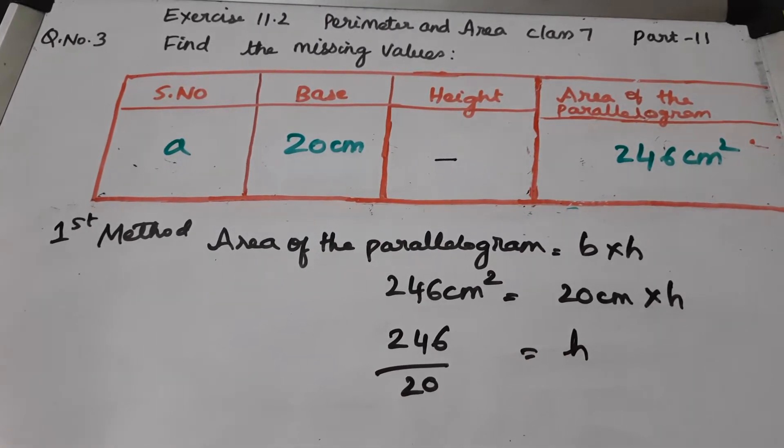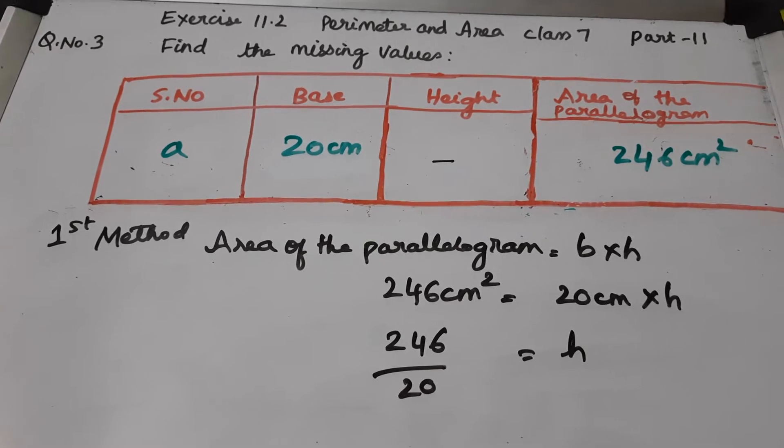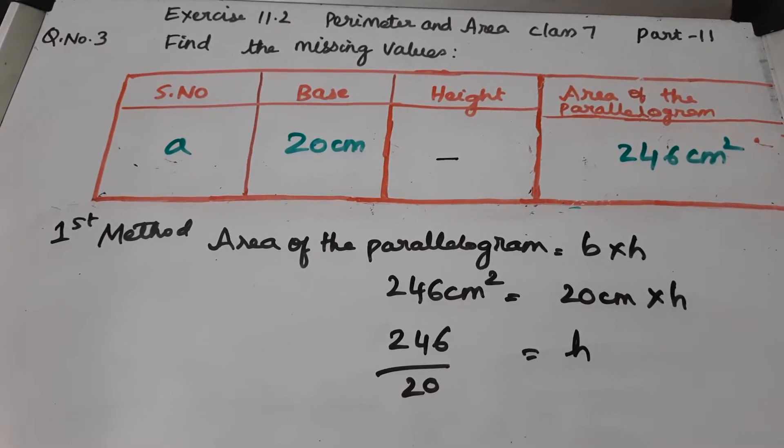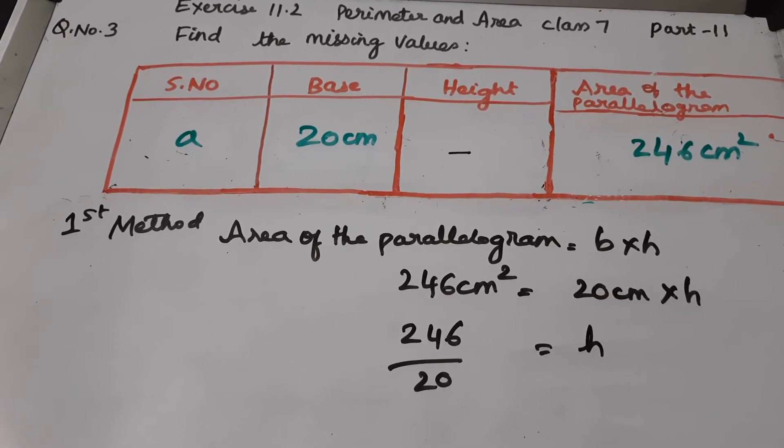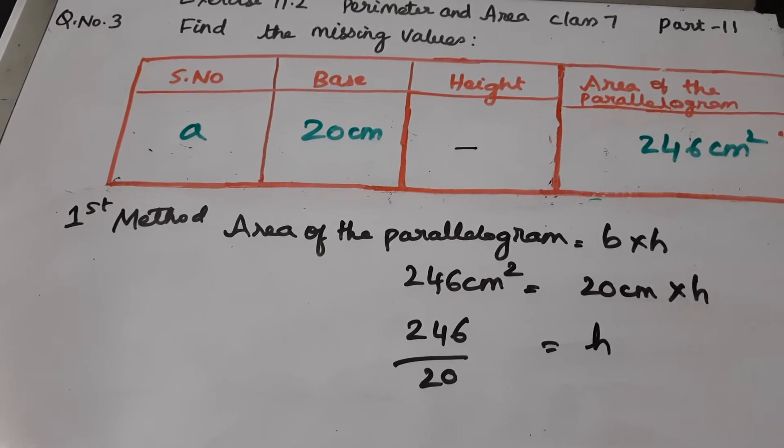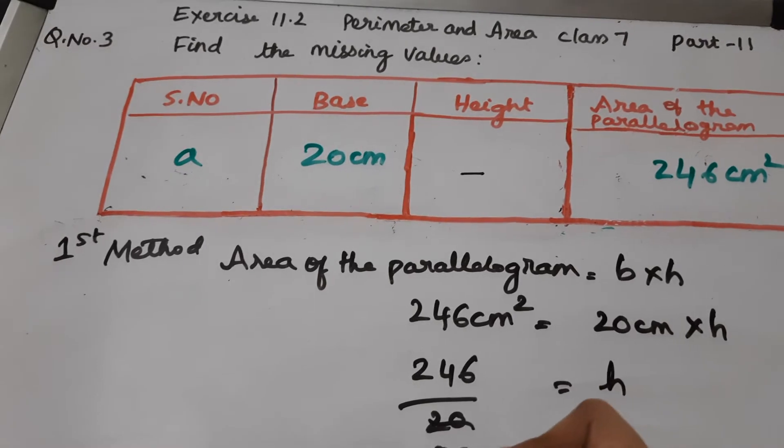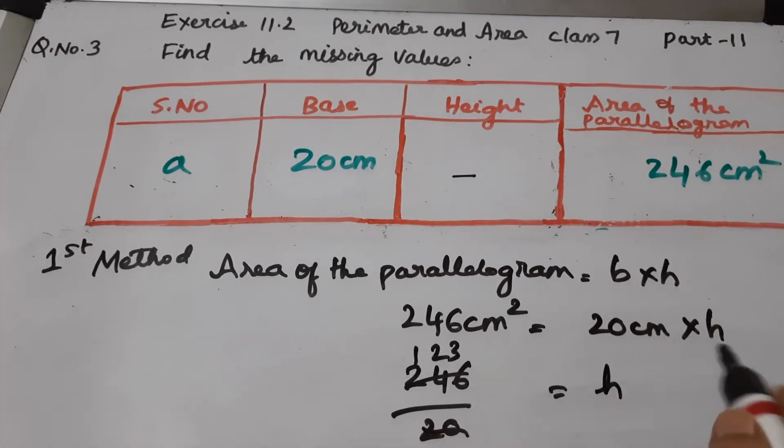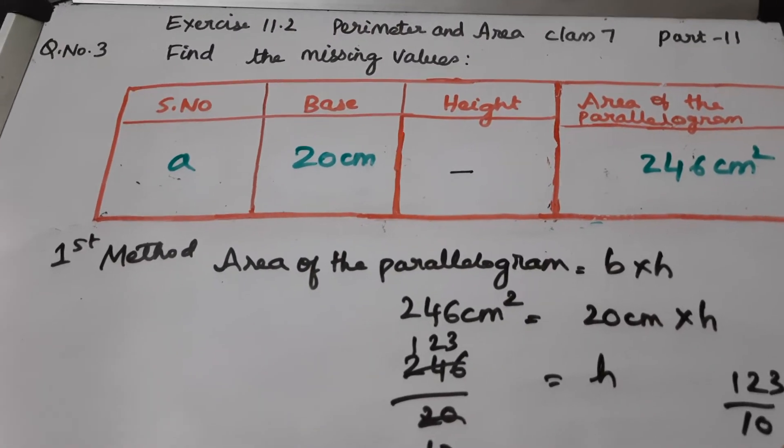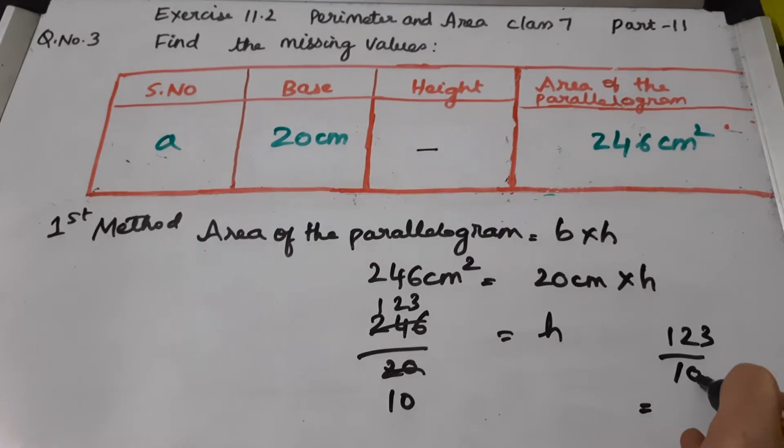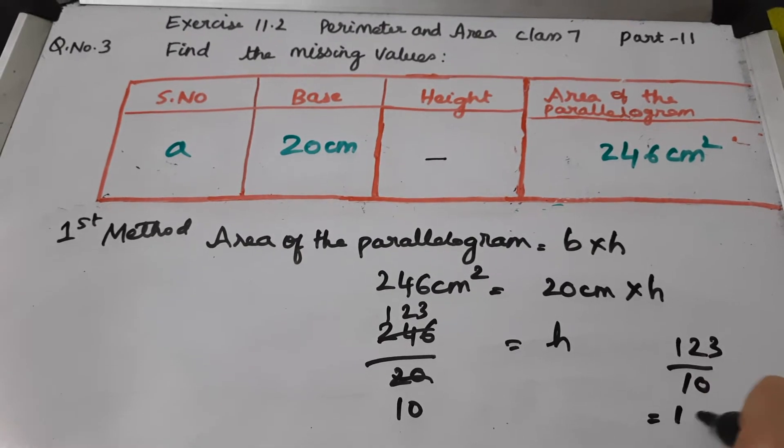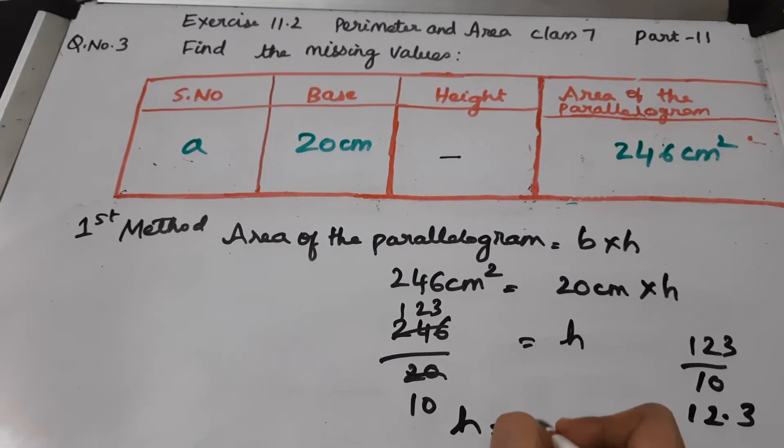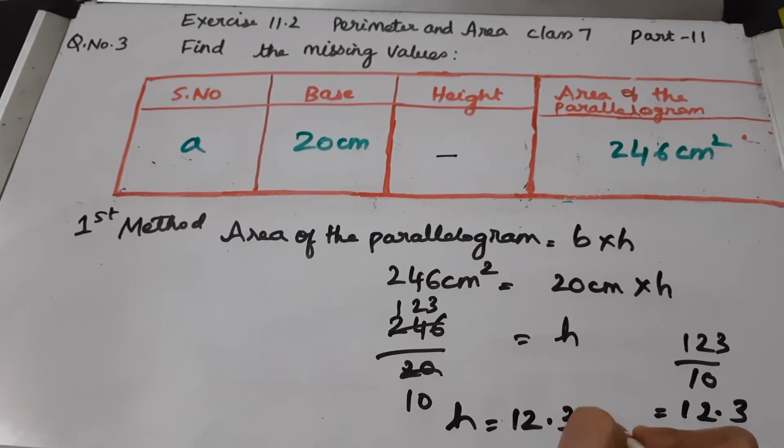Now it is simplification. Simplification has to be done using the same table. You have to cancel the numerator and denominator by using the same table. Now it goes 20 to 10s, 2s, then 246 divided by 20. There is a point here from the right side at one decimal point. So height is 12.3 centimeters.